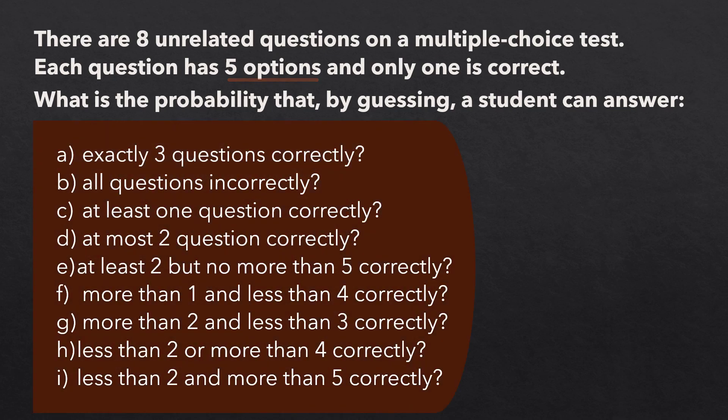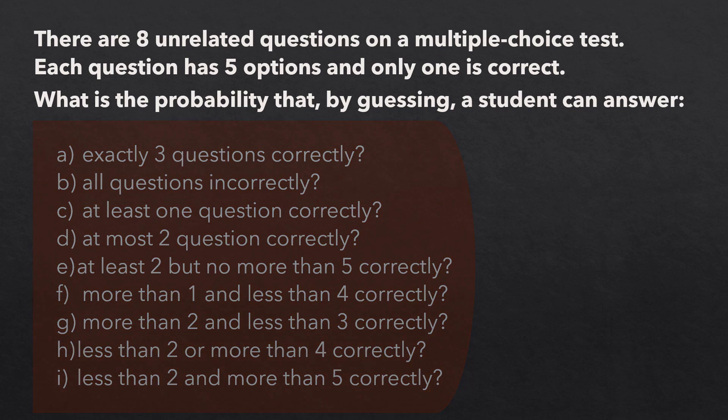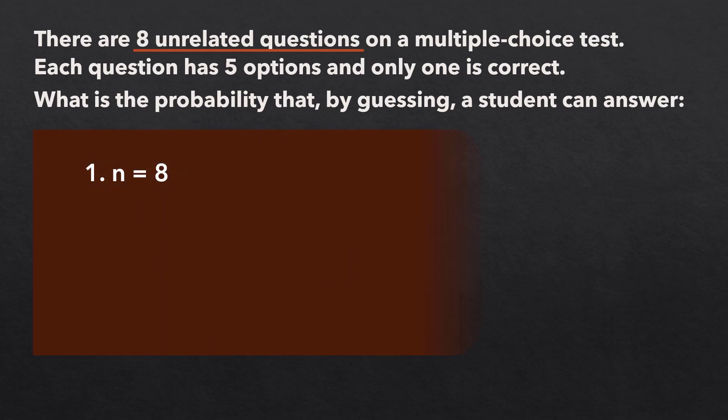We see that the problem satisfies the binomial distribution properties because there is a fixed number of trials n which equals 8. Each trial has two possible outcomes, correct or incorrect.